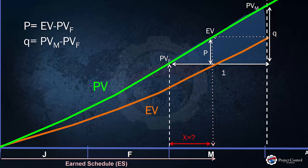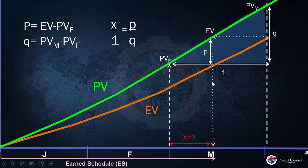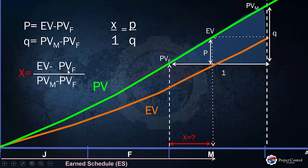Looking at the triangle, I already have P, I have Q, and I have the period of 1. The only unknown is X. In that triangle, by applying some trigonometry, X over 1 equals P over Q. Since 1 is already 1, therefore X — the fraction of time we are looking for — equals Earned Value minus Planned Value for the previous month, over Planned Value of the current month minus Planned Value of the previous month.